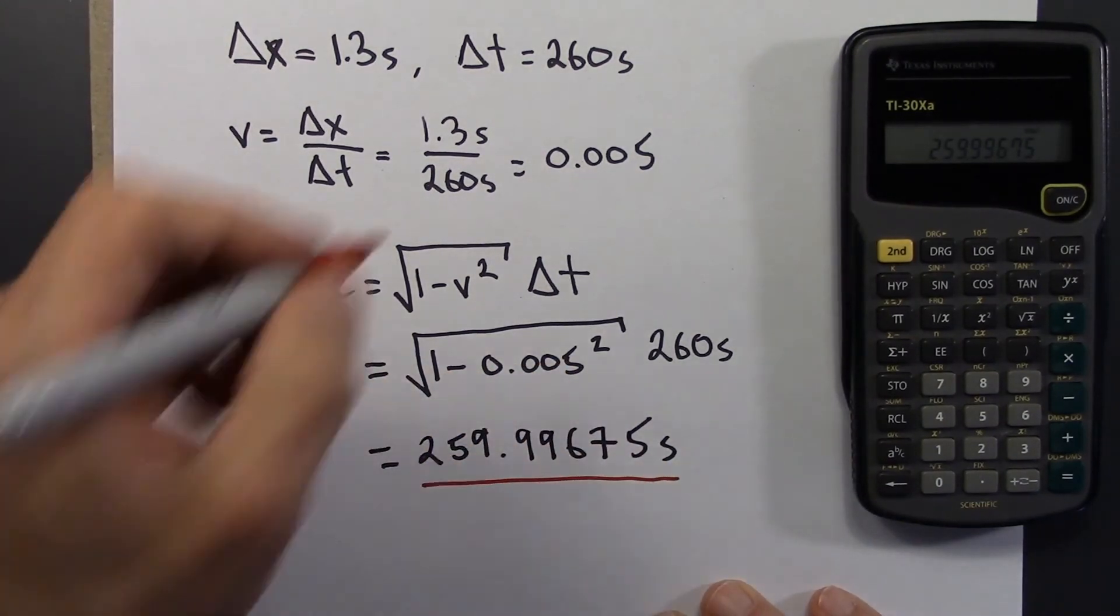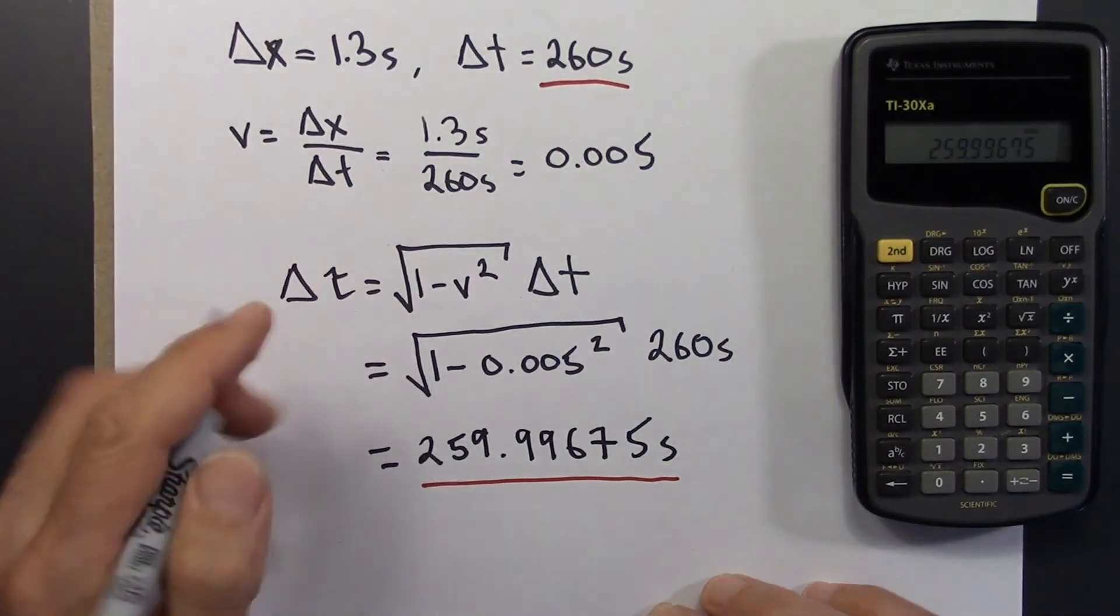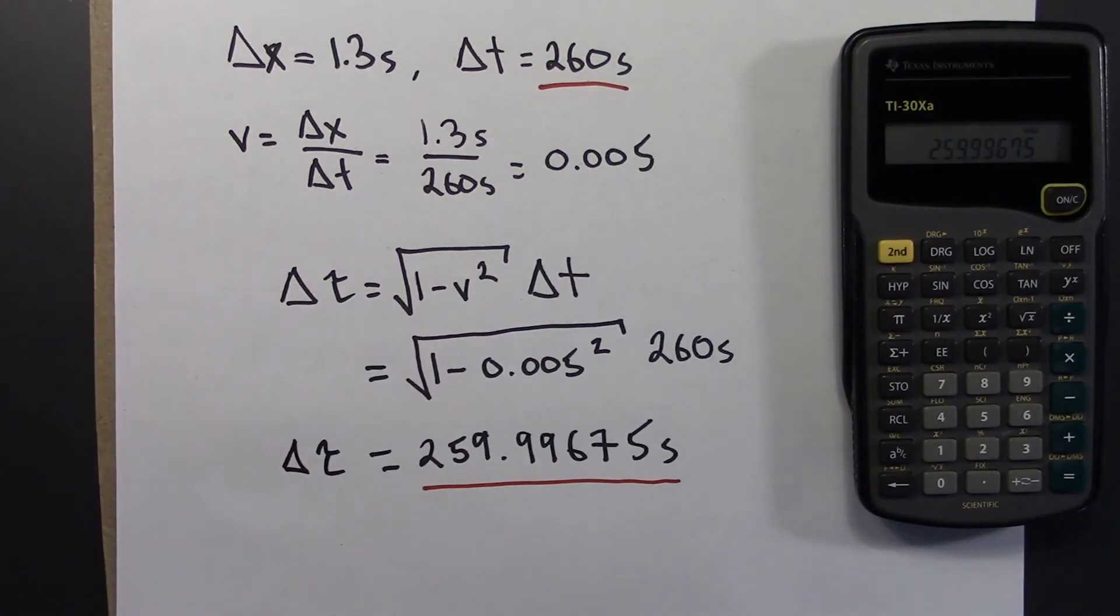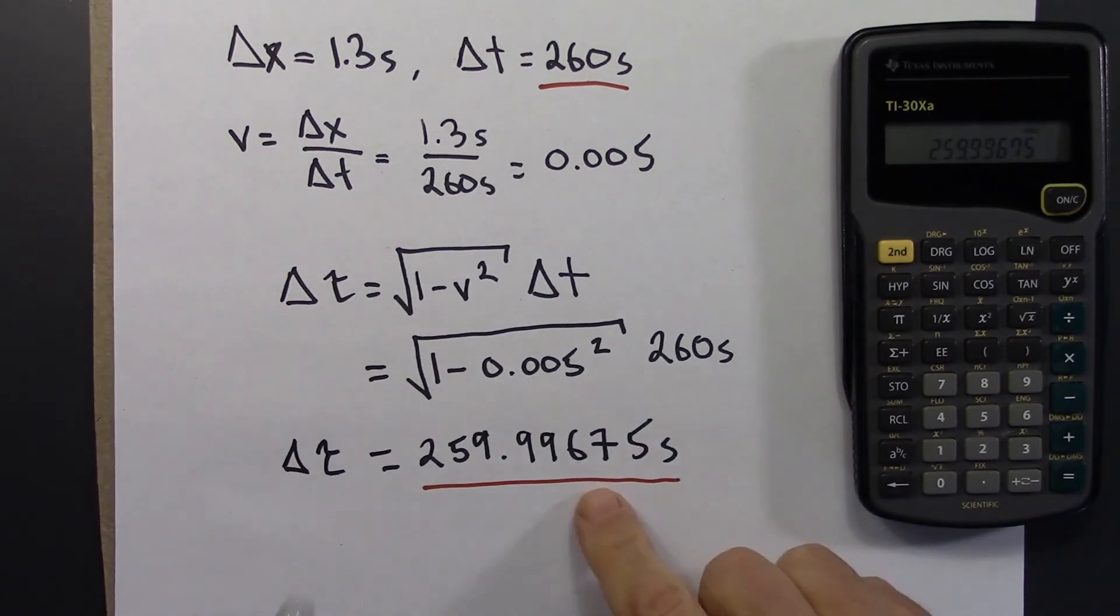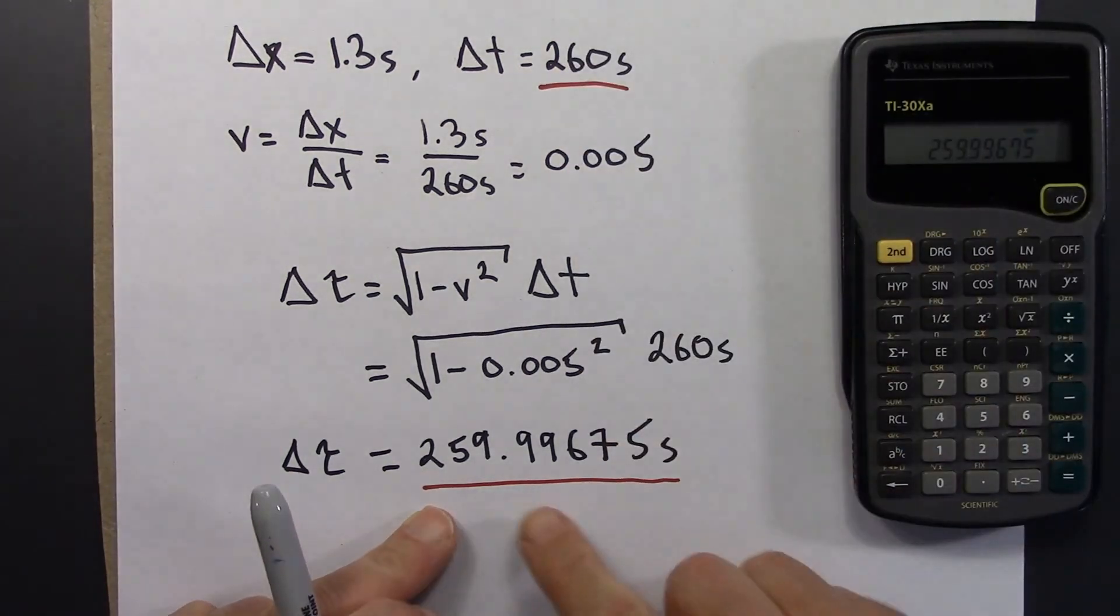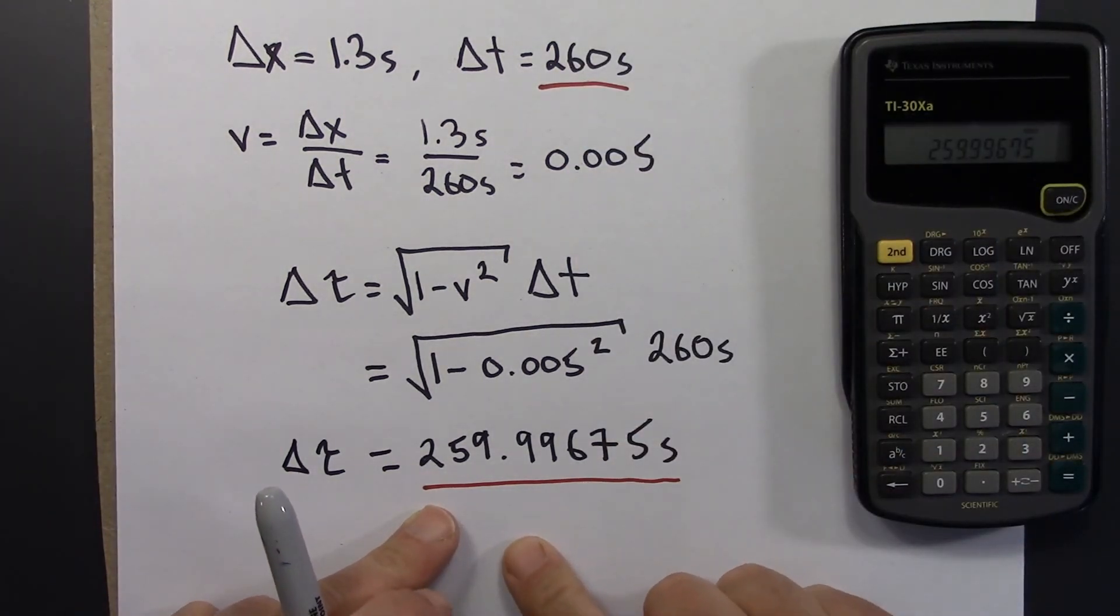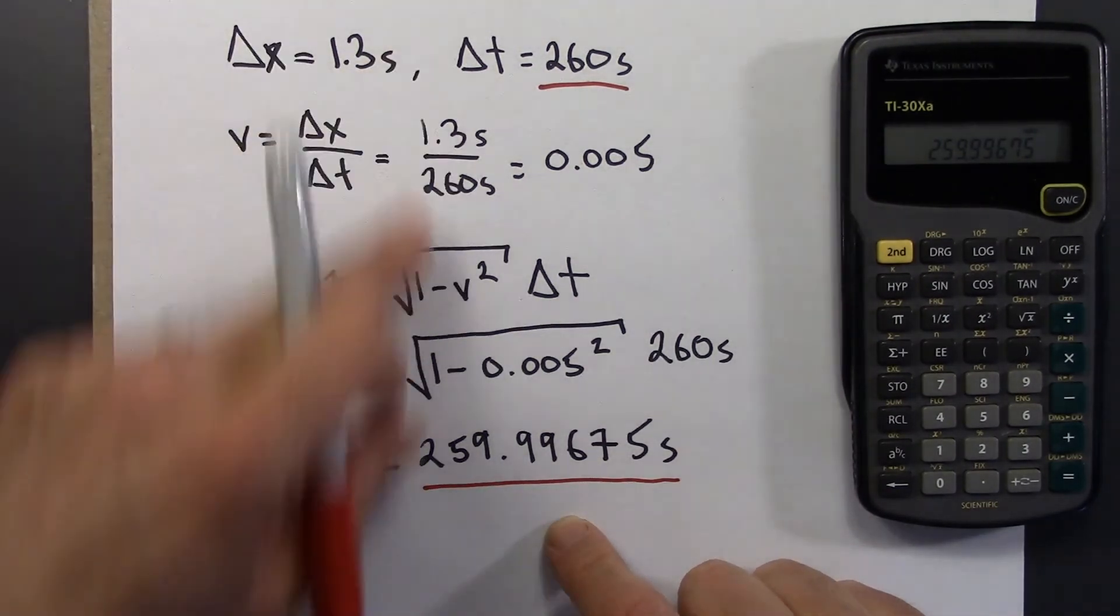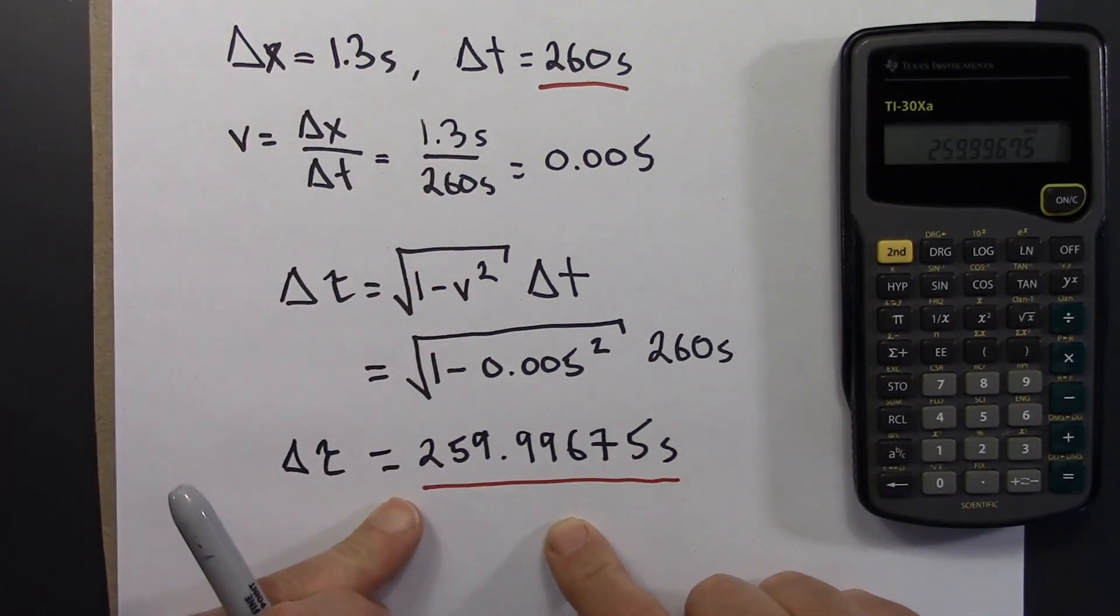So, as expected, let's just make it clear that this is a proper time. Proper time is a little smaller than the coordinate time, but by a tiny, tiny amount. So these are the numbers that I got for doing that quiz.